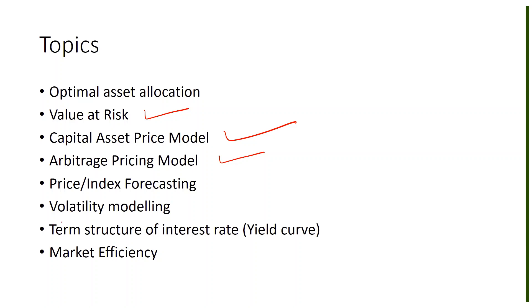You can also use financial econometrics for volatility modeling. Volatility is about knowing the risk associated with a given financial asset — it's about uncertainty in the future, which is important to assess risk. From a pricing point of view, higher uncertainty means higher volatility, and you would want a higher price associated with that.